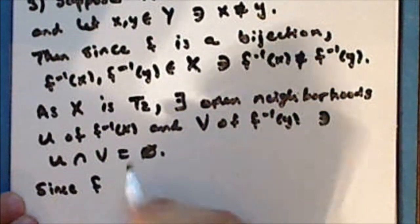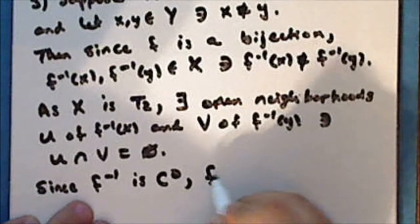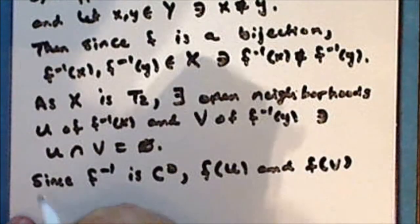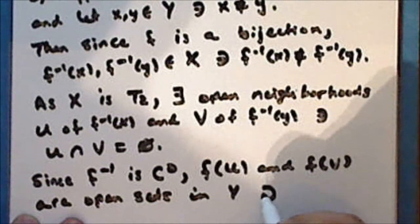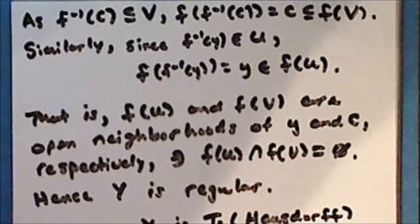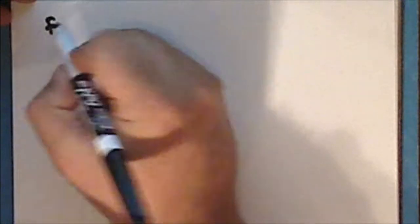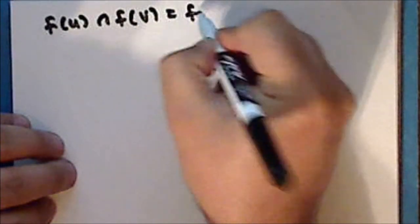Now, since the inverse of the function f is continuous, the direct image of u and the direct image of v are open sets in the space Y, such that the intersection of the direct image of u with the direct image of v is the direct image of the intersection of u and v, which is the direct image of the empty set, which is the empty set.